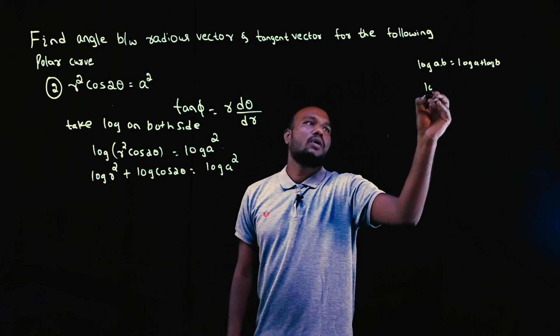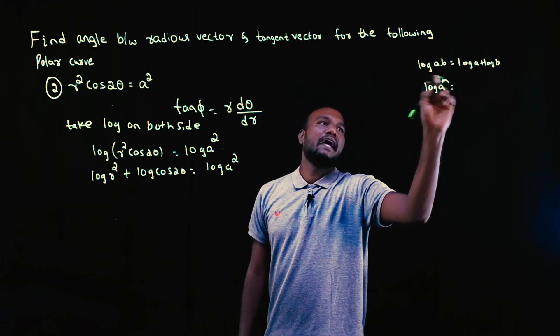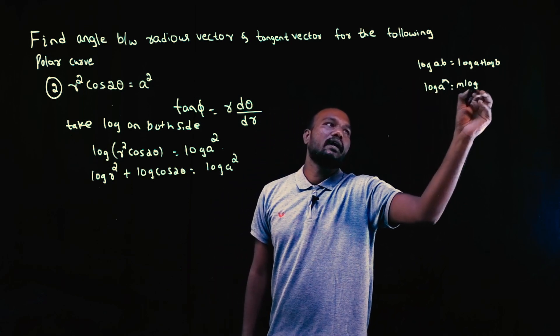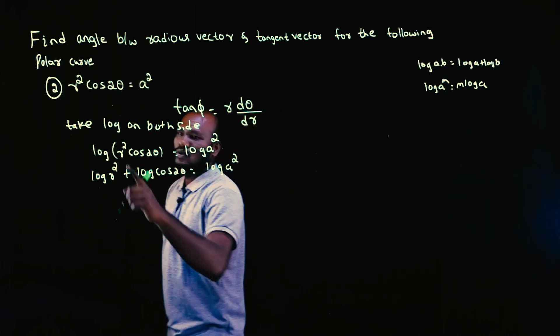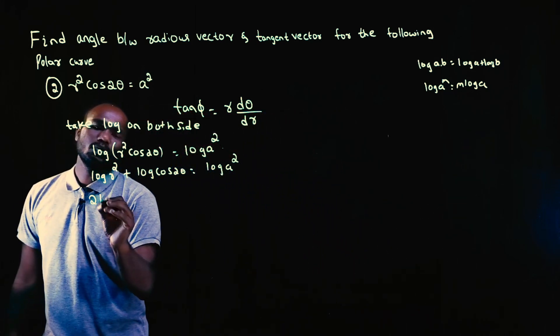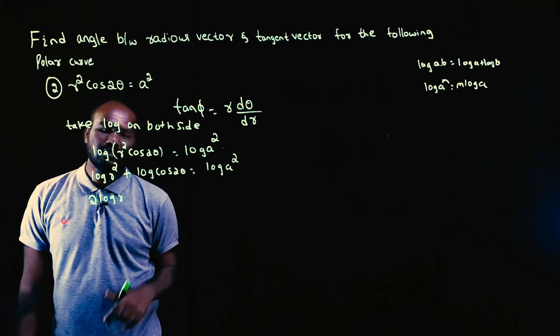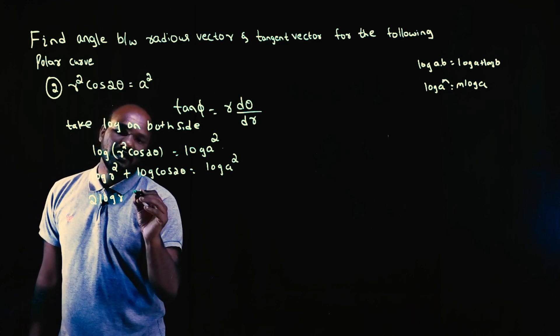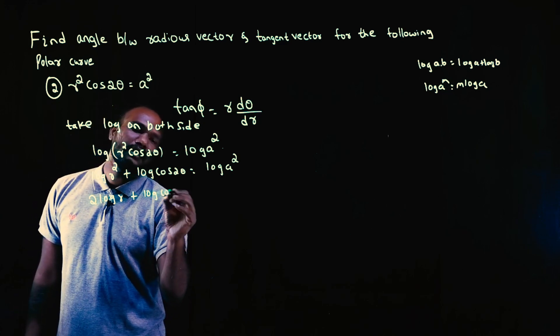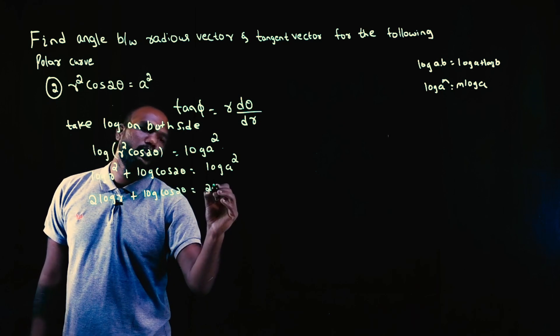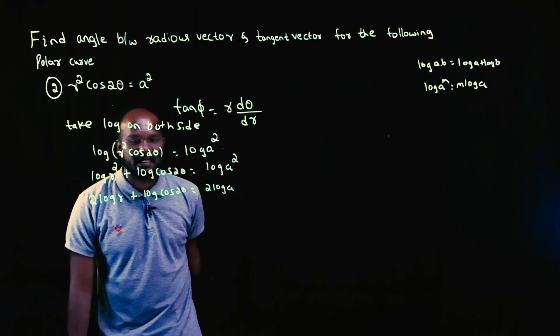Similarly, log(a^m) equals m log(a). These are the properties. So m will come in front. So 2 log(r) + log(cos 2θ) equals 2 log(a). This is done.